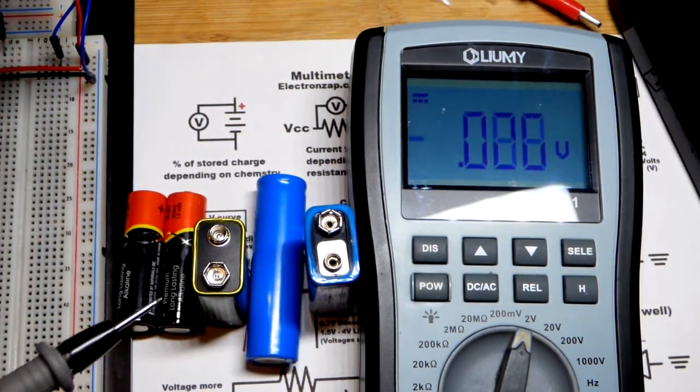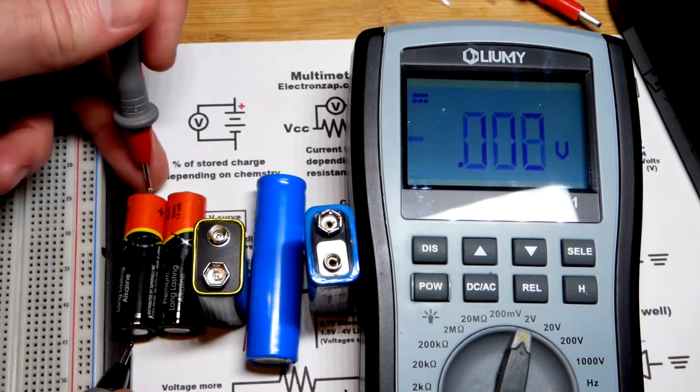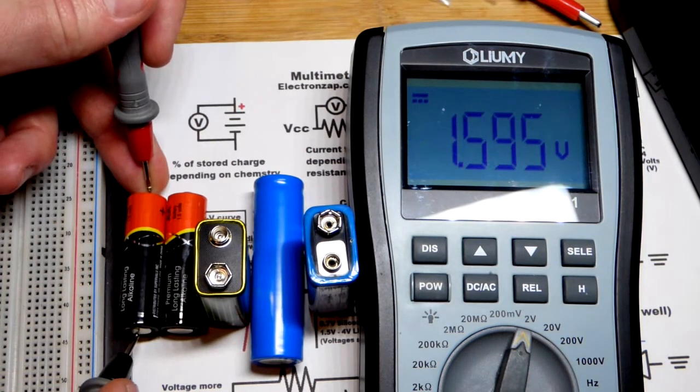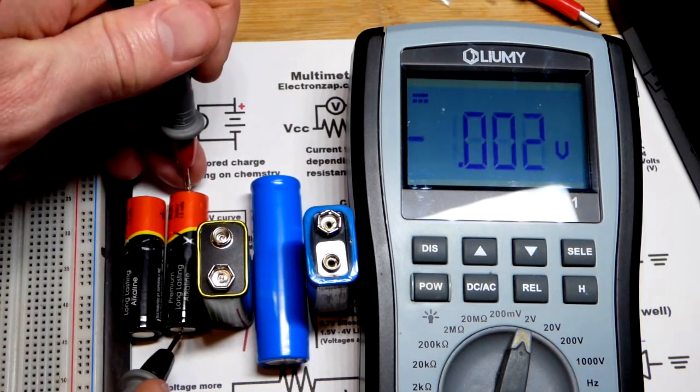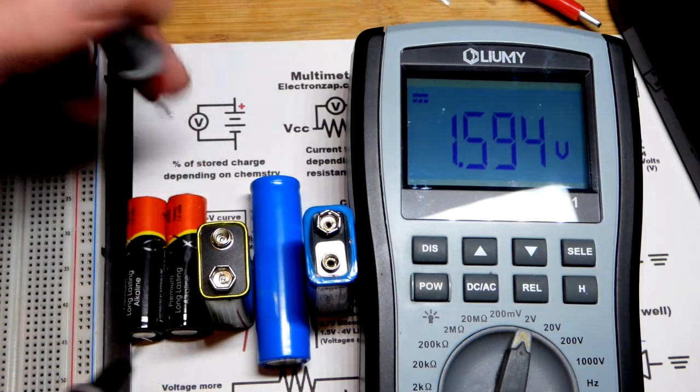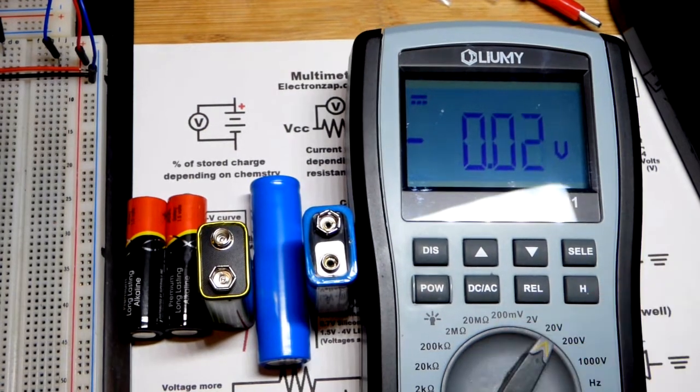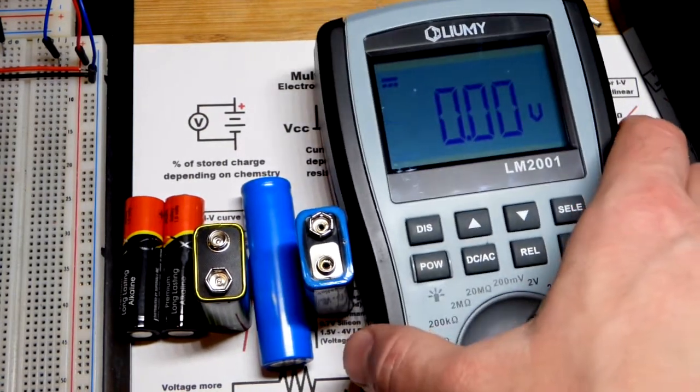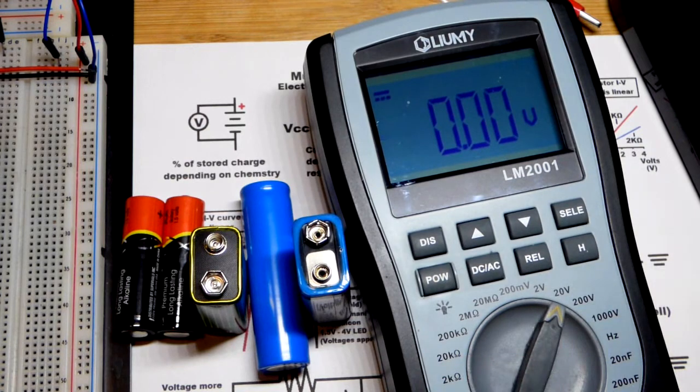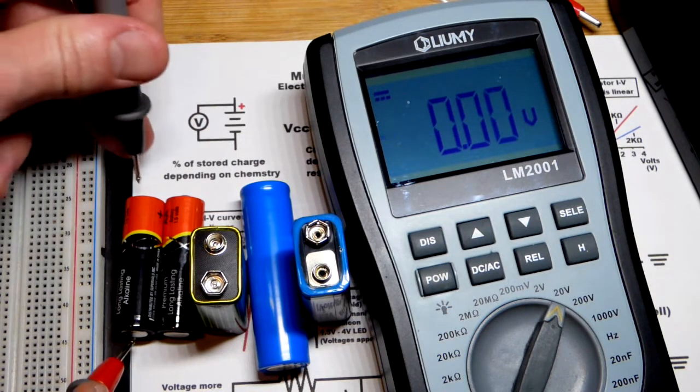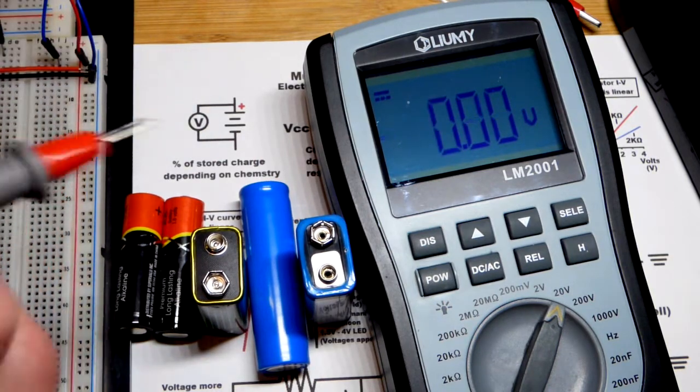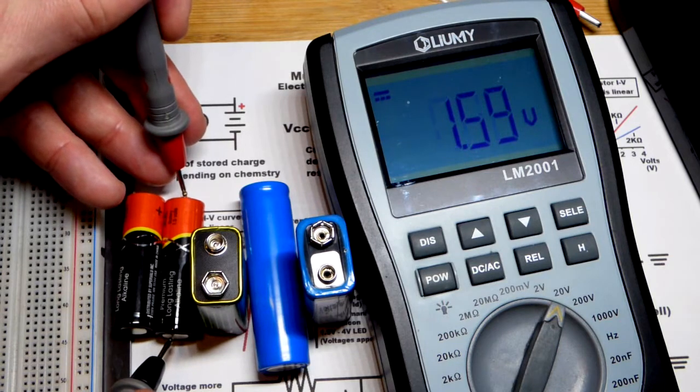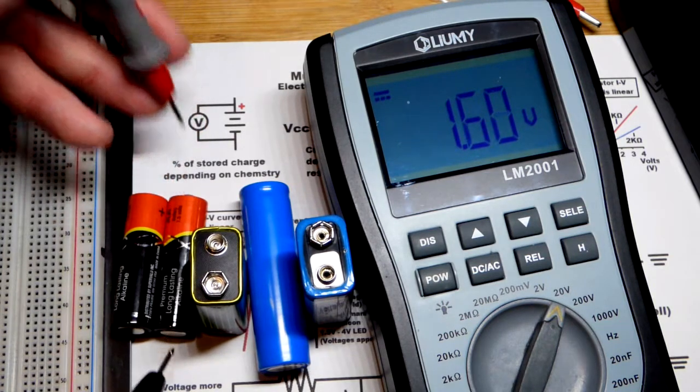Now we just take the red probe and go to the button on top and at the bottom you can see 1.595, and we'll do this one really quick. Same thing, basically almost the exact same voltage. Now we go to 20 volts and you'll see it says negative 1.6. It doesn't hurt to connect it backwards, you just get a negative number.